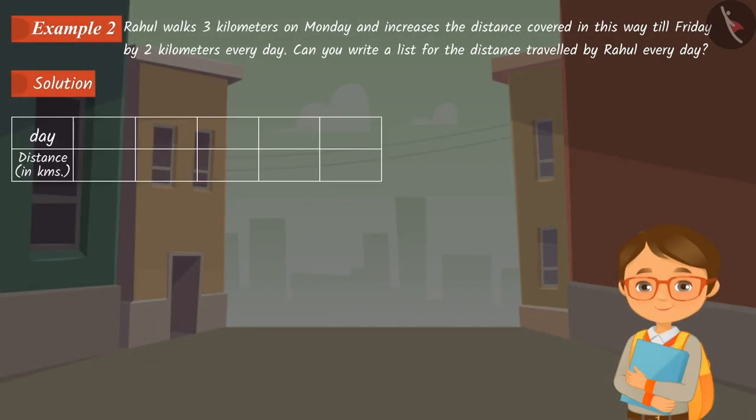As per the question, Rahul travels a distance of three kilometres on Monday. Because he increases the distance travelled by two kilometres every day, the distance travelled by Rahul on Tuesday would be three plus two equals five kilometres.